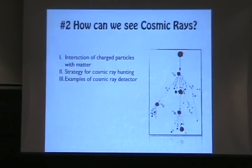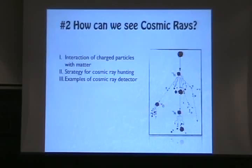That's why the interaction of charged particles with matter is very interesting and we need to know all the details. After that, we will try to talk about what is the good plan if you want to hunt some cosmic rays — depending on what kind of cosmic ray information you want to get, you need to decide where to put your detector and how to design it. Then I will give a brief summary of examples of cosmic ray detectors from the very beginning — from the electroscope up to current detectors.